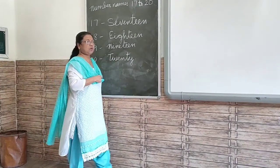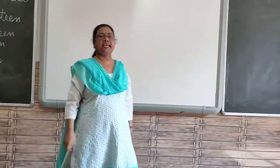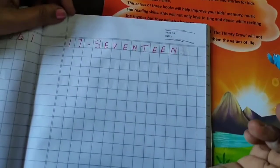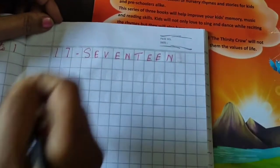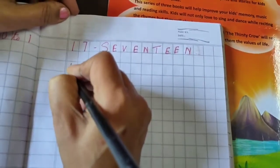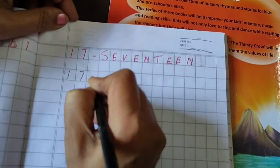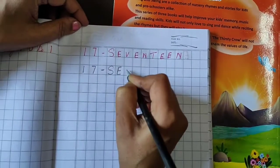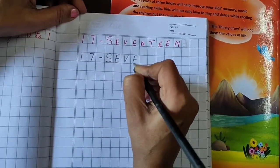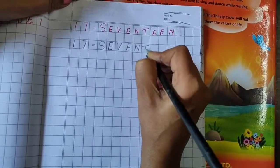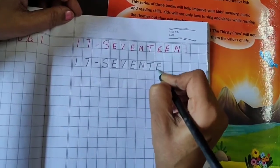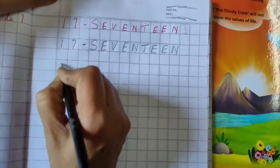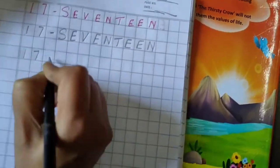Okay children. Now I will show you how to write in your maths copy. Okay children, take out your maths copy and start writing. 17: 1, 7. 17. S, E, V, E, N, T, W, E, N. 17. Once more. 1, 7. 17.